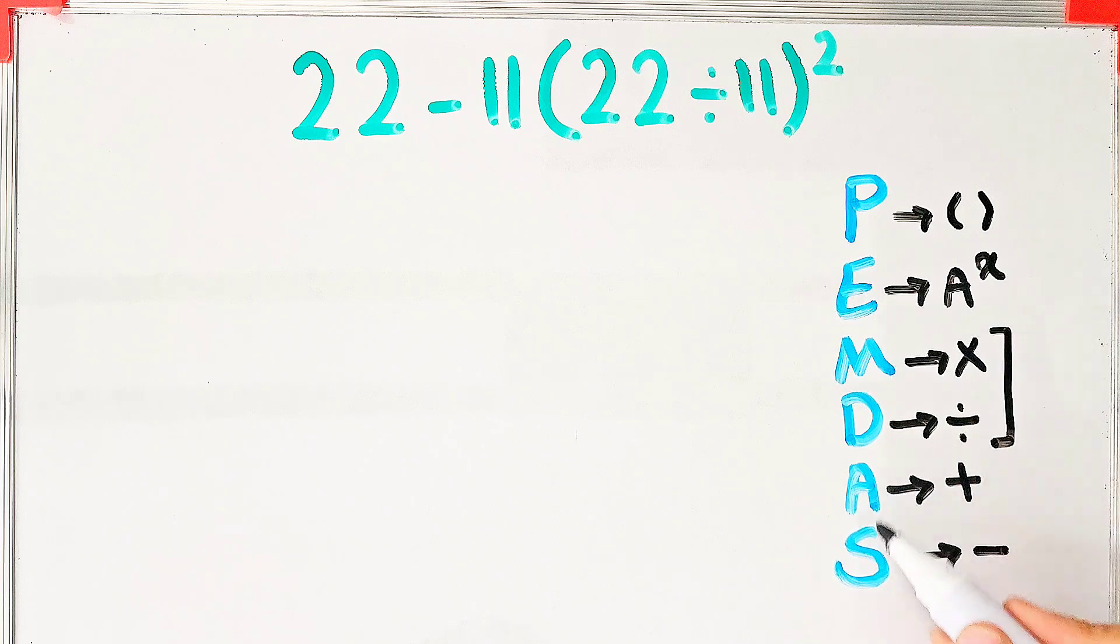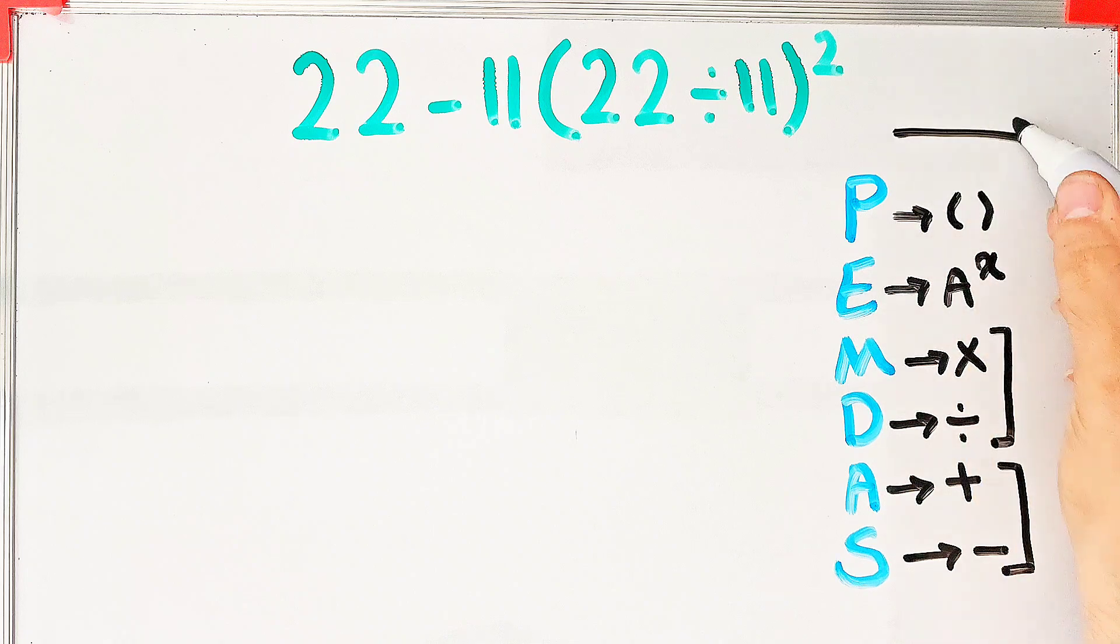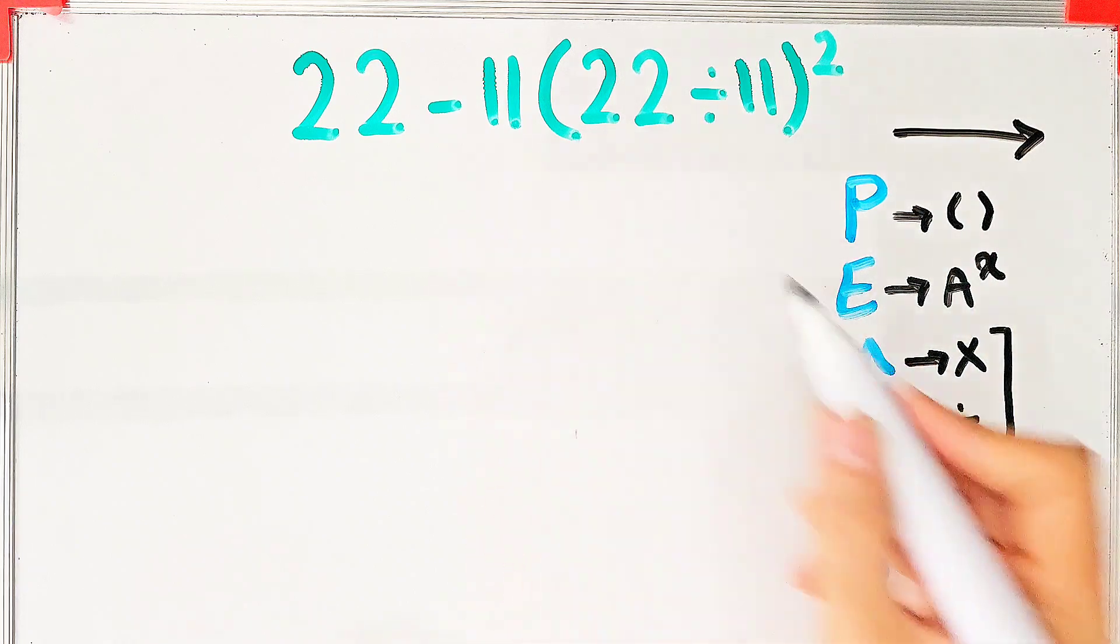Multiplication and division are at the same level of priority, and addition and subtraction are at the same priority. When we have both in an expression, we start from the left and simplify the question.